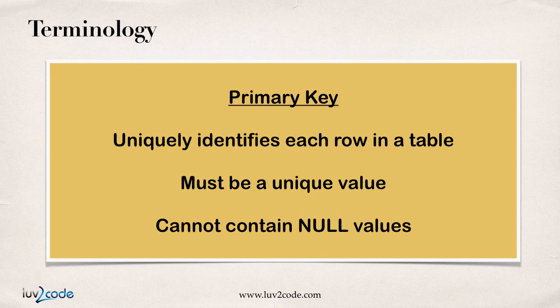Think of the example of a university or a college. You have a lot of students there — each student has their own unique student ID. The key here is that it's unique, so two students can't share the same ID. They each have their own ID number, and that's an example of a primary key.